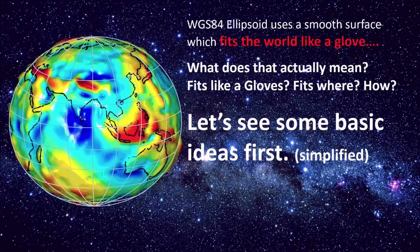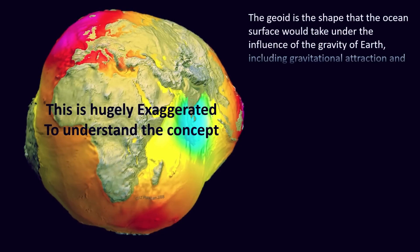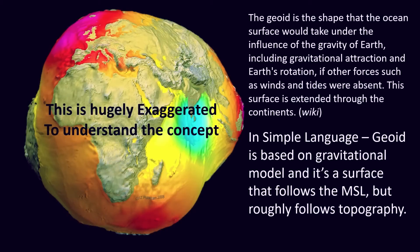The geoid is the shape that the ocean surfaces would take under the influence of gravity of Earth, including gravitational attractions and Earth rotation, if other forces such as winds and tides were absent. This surface is extended through the continents. In simple language, geoid is based on gravitational model and it's a surface that follows the mean sea level but roughly follows the topography.